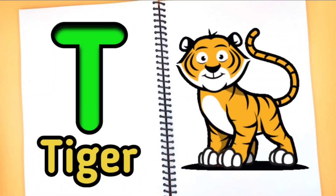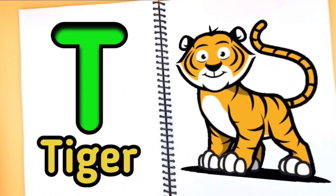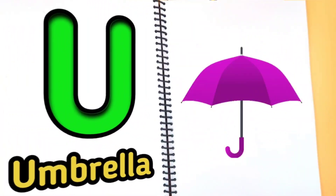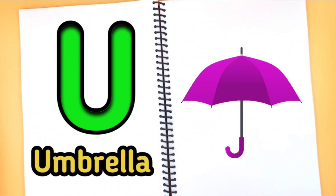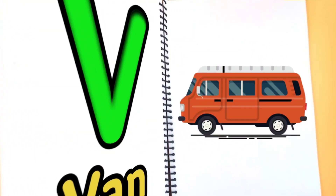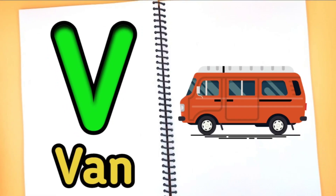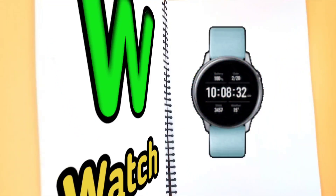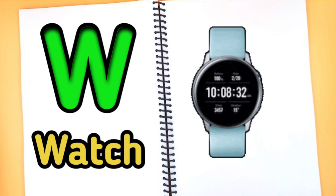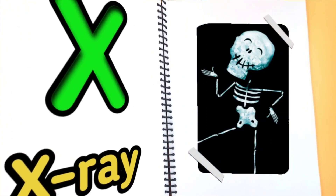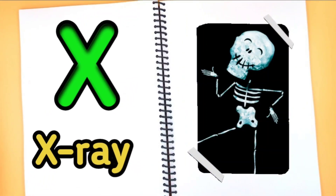T for tiger, U for umbrella, V for van, W for watch, X for x-ray.